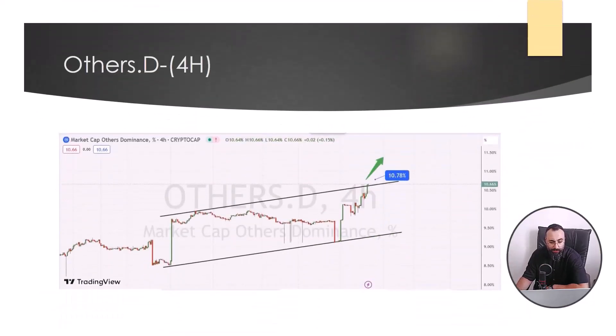For Others dominance in the 4 hours timeframe, by checking the time of 4 hours, if the saving of the ascending channel is broken in the range of 10.78%, there is an expectation of growth of index up to the range of 11.60%. If the 10.18 range is broken from the bottom, the above analysis will be invalid.